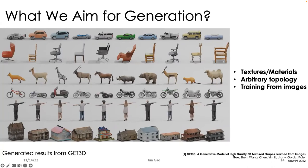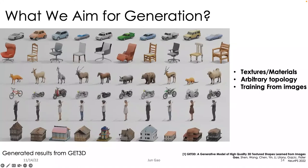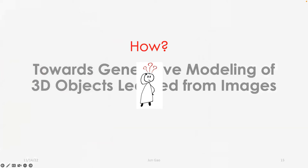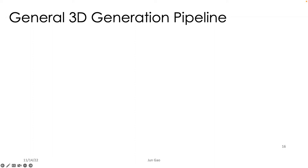What are we aiming for? We aim to directly generate 3D objects with textures and materials. Furthermore, the object should have arbitrary topology, such as genus greater than zero, since real-world objects can be arbitrarily complex. Lastly, we hope to learn from 2D images, sidestepping the requirement for 3D data. This is a very challenging problem — how should we tackle it?